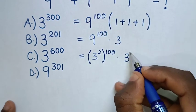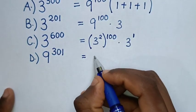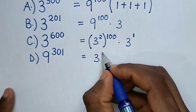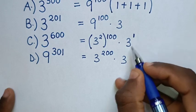Whereas 3 is same as 3 power of 1. So it will be equal to 3 power of 2 times 100 is power of 200, then times 3 power of 1.